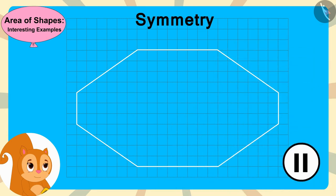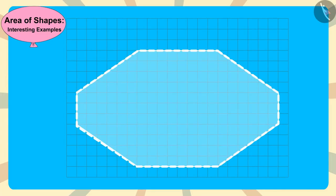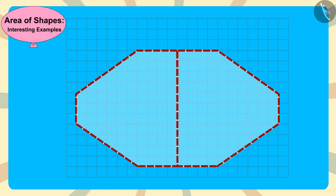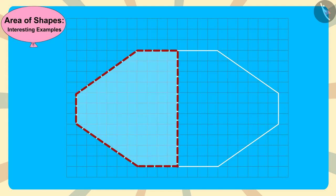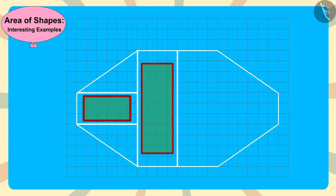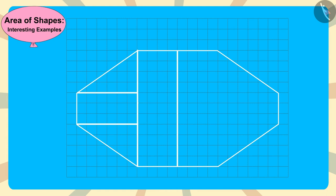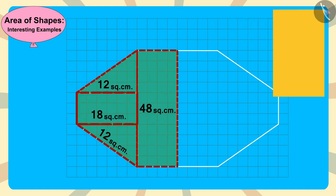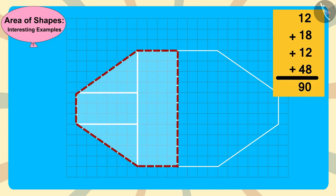If you wish to, you may stop the video and find the answer. We can divide this diamond's outline into equal parts like this, and then divide that part into triangles and rectangles. All we have to do is find the area of these triangles and rectangles, then add them to find the area of this part of the diamond: 90 square centimeters.